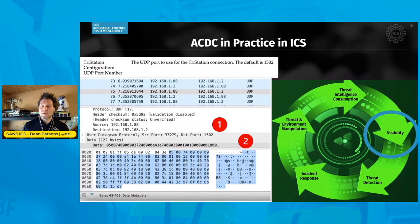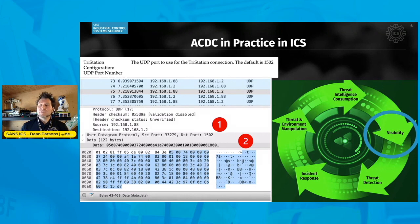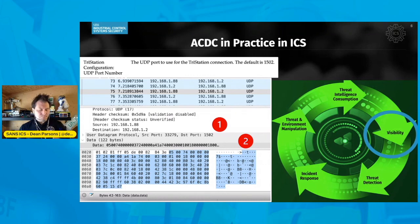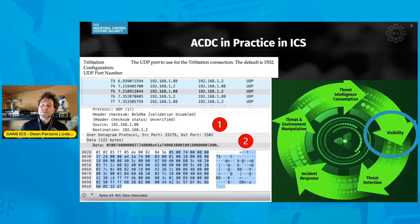Moving from threat intelligence, we go into visibility. Visibility allows us to look in the network for suspicious activity. Looking at the network specifically, we can see the tri-station protocol operating, as you'd expect in normal circumstances, on UDP port 1502. This is the communications between the engineering workstation and the Triconics safety-instrumented system PLCs. The question in the visibility stage is: do you have the visibility on the network to see control system traffic in the environment and determine if it's legitimate or not?